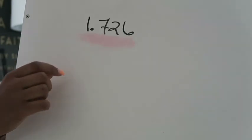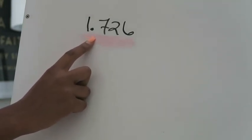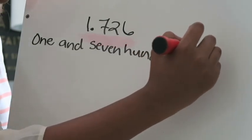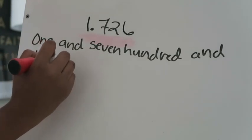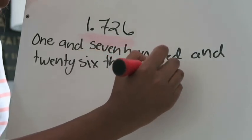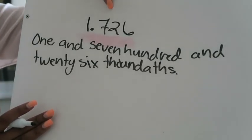The next thing we're going to talk about is word form. In word form, you're just going to physically write out the words you say when you read this decimal to someone. So I would write: "one and seven hundred and twenty-six thousandths." That's word form — you're just writing out the words you say when reading the number out loud.